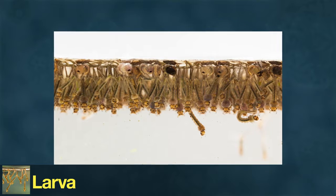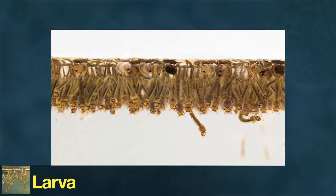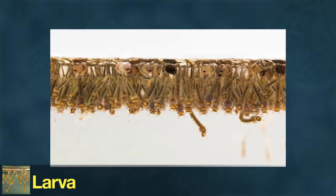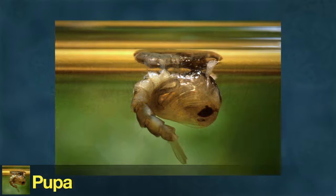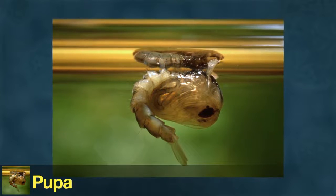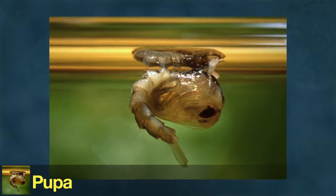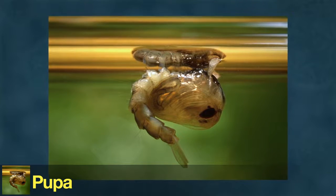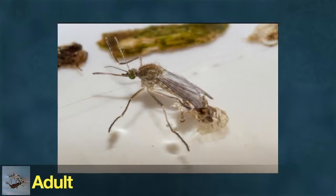After growing and shedding its skin several times, the larva enters the third stage of its life cycle—the pupa. The pupa stays near the water's surface and needs air to breathe, but does not eat. It puts most of its energy into developing into its fourth and final stage—the adult.